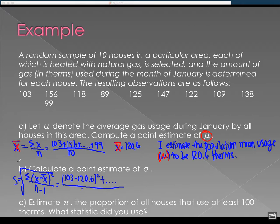x bar we already calculated as 120.6. We have 103 minus 120.6 squared plus dot dot dot. All of that over n minus 1. Okay. We are estimating sigma.